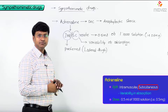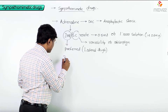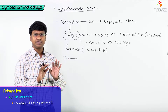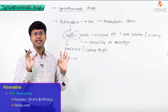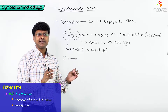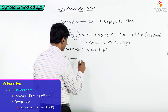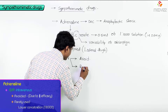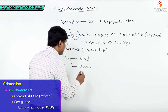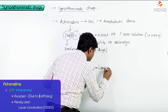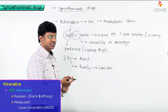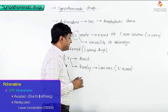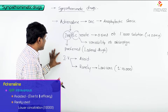The intravenous route is avoided for adrenaline. However, it can be used rarely, and if given intravenously, it must be at a much lower concentration — around 1:10,000.